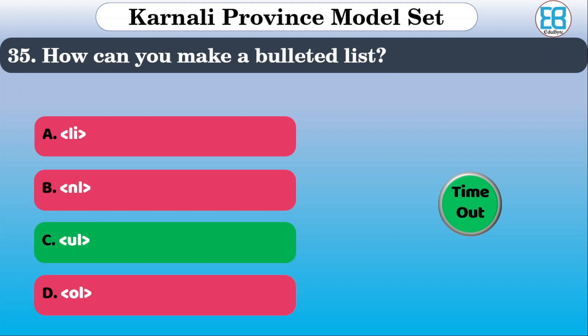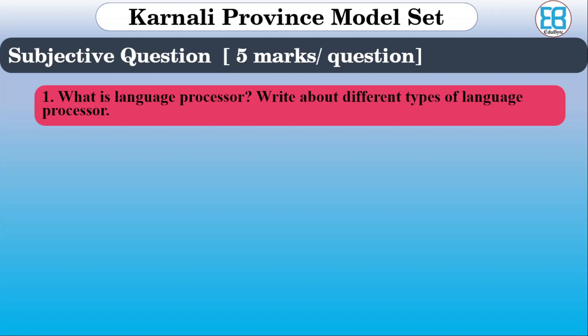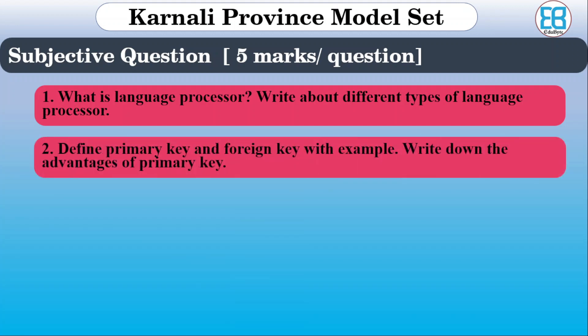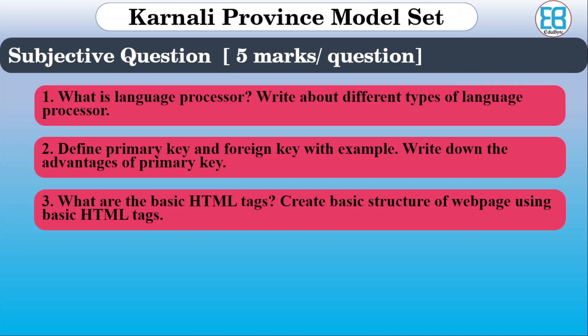This video is very important for the computer operator course. These were objective questions — for subjective questions, you need to write answers. The subject questions include: write about different types of language processors, describe primary key and foreign key with examples, advantages of primary key, basic HTML tags, and the basic structure of a web page.